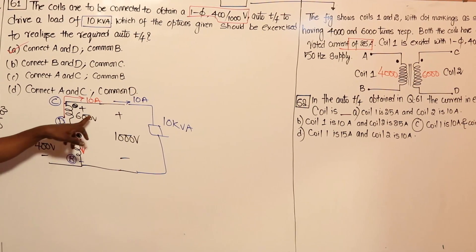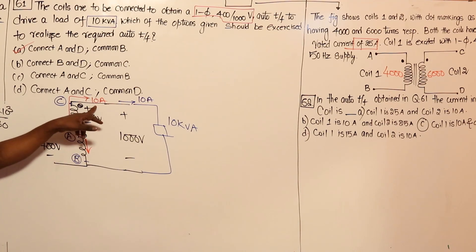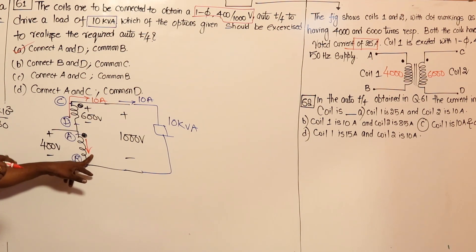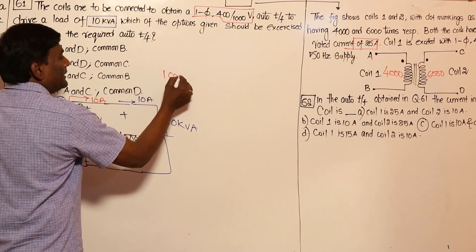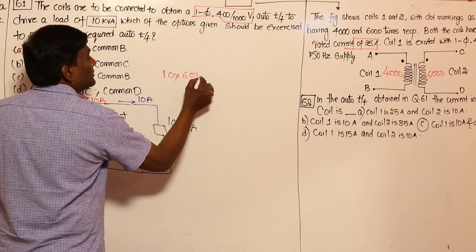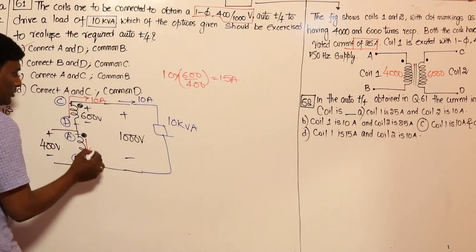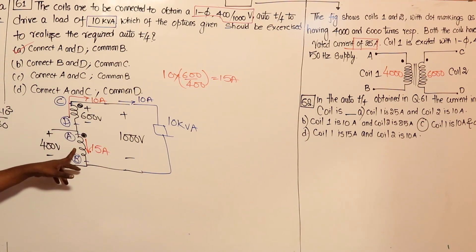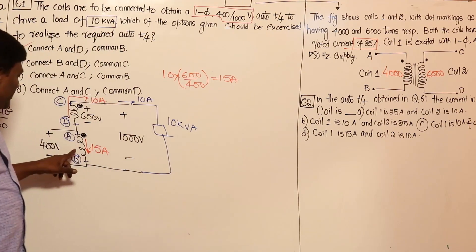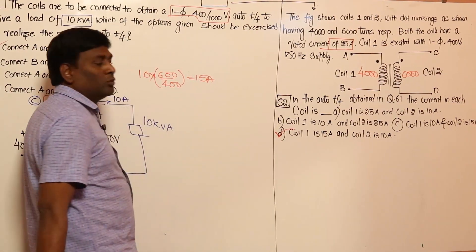Coil 2 (600 volts) is the HV winding and coil 1 (400 volts) is the LV winding. Going from HV to LV, the current must increase. The current ratio is 600 divided by 400, so the LV current is 10 times 600/400, which equals 15 amperes. Therefore, coil 1 carries 15 amperes and coil 2 carries 10 amperes.